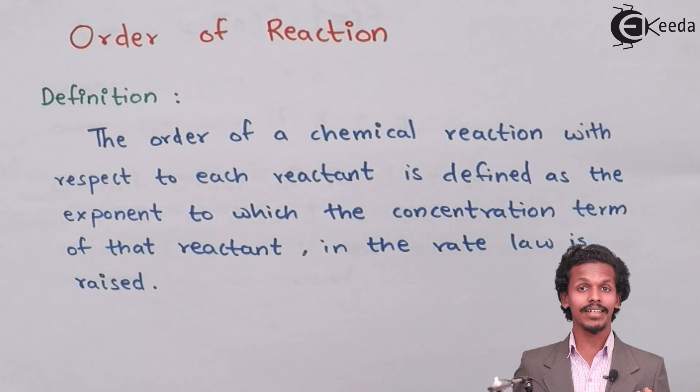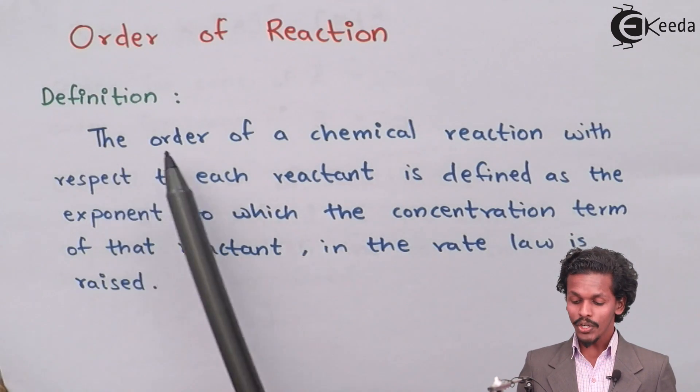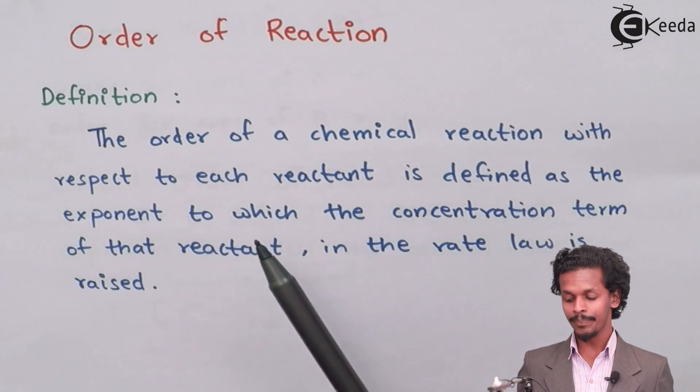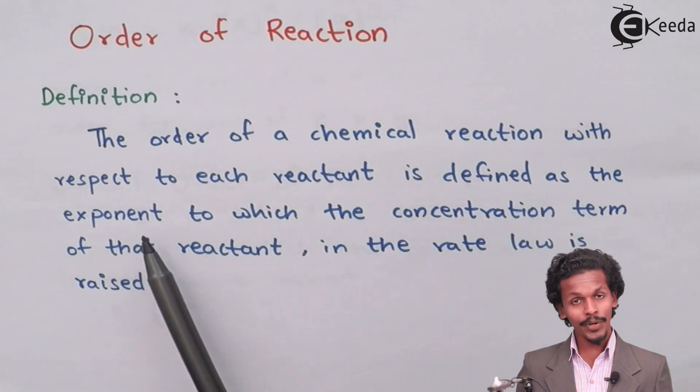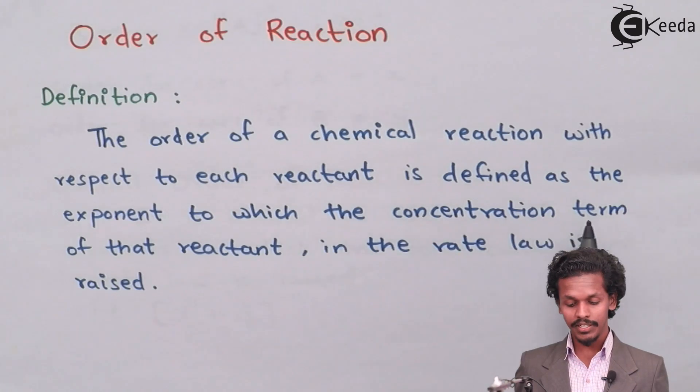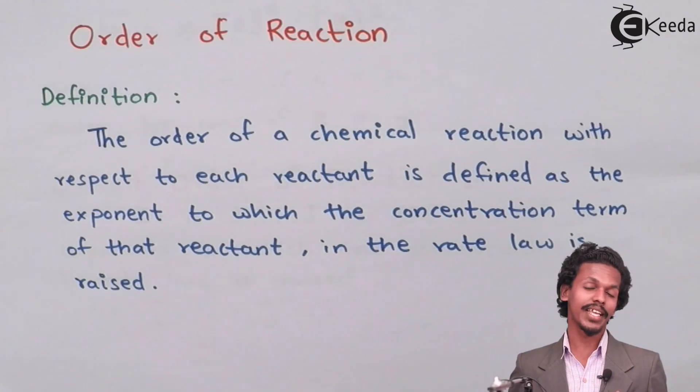So let us see what is the order of reaction. The order of a chemical reaction with respect to each reactant is defined as the exponent to which the concentration term of the reactant in the rate law is raised.